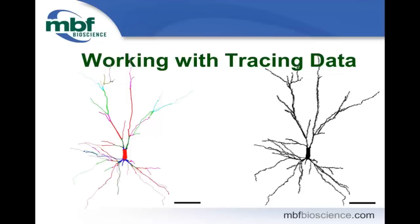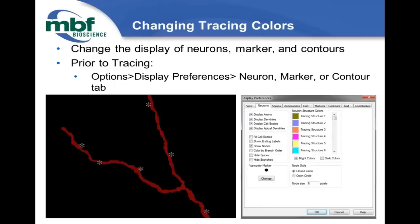Now that we've wrapped up working with images and image stacks in Stereo Investigator and Neurolucida, we're going to talk about working with tracing data — neurons that you reconstructed, so dendrites and axons; contours that delineate regions of interest; and markers you place to mark particles, cells, or varicosities. We'll start by changing tracing colors.